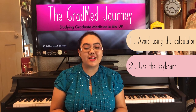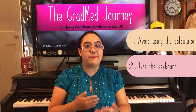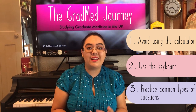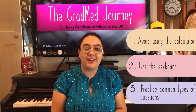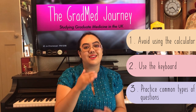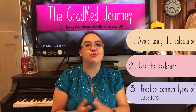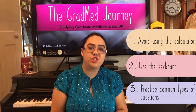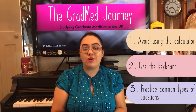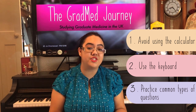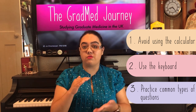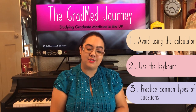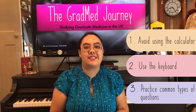Another tip is to practice things like percentage change and simple or compound interest, because those are the kinds of questions the UKCAT really likes to use, especially on more complex questions with large tables or graphs. If you can quickly work through those question types because you've practiced them, that will save you time — particularly with table questions where there's a lot of information to read through and pick out.